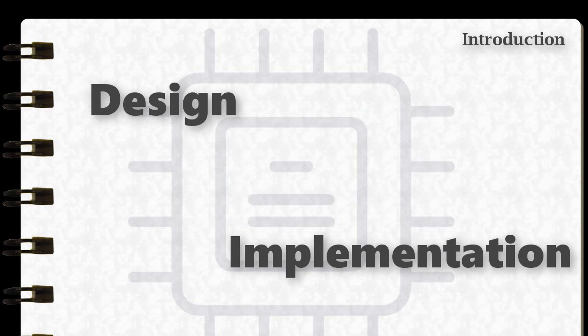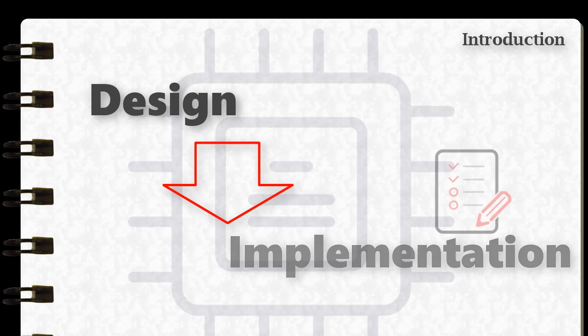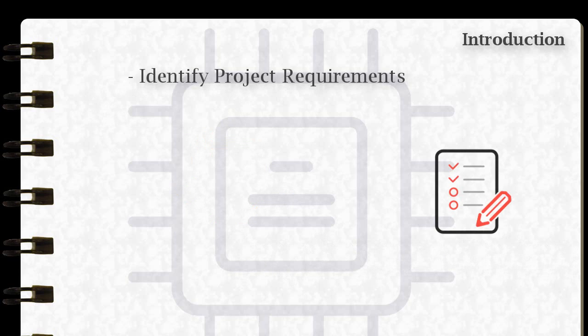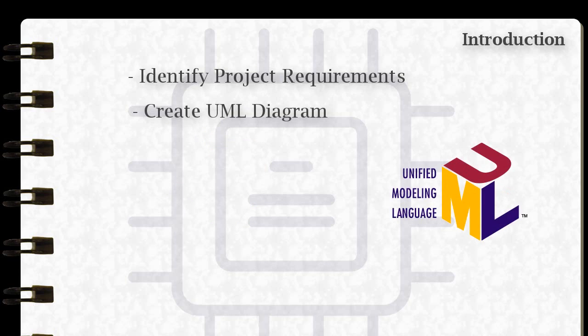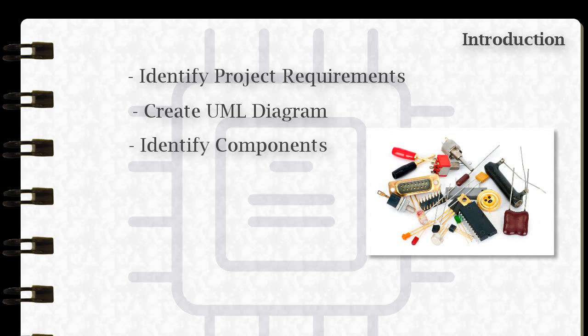This series will take you on a step-by-step tutorial from designing to implementation of the project. First, we will begin by writing down the project requirements of the password-based security system. Then, we will proceed on creating the UML diagram to define the behavior of the system due to particular user input. Third, we will identify all the components required to make it happen.